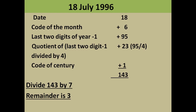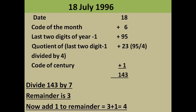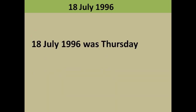Since this is a leap year and the month is after February, you add 1 to the remainder: 3 + 1 = 4, which corresponds to Thursday. So 18th July 1996 was a Thursday. Important note: for January or February of a leap year, do NOT add 1. Only add 1 for months after February in a leap year.